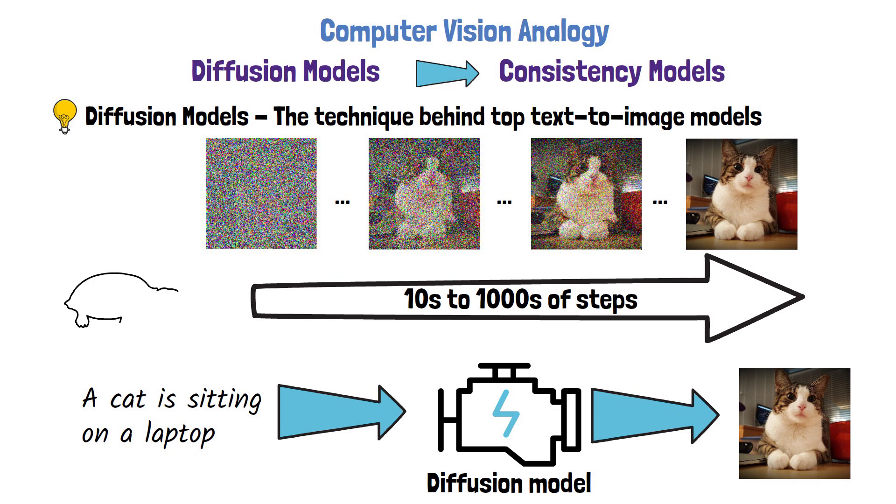The noise removal process can take between tens to thousands of steps, so it comes with a latency drawback. To avoid the latency drawbacks, consistency models were invented. Consistency models reduce the number of iterations required to remove the noise from an image.